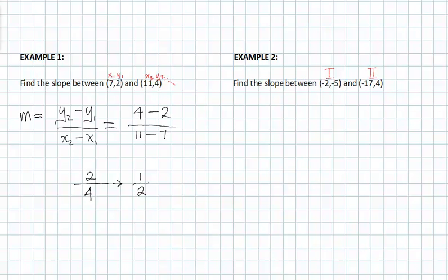I want you to see in our first example where I'm getting the values for x sub 2, y sub 2, and x sub 1 and y sub 1. But I don't want you to do that for the rest of your graphing life. I want you to be able to move on.